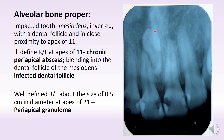Now moving on to 2-1, what we see is a reasonably well-defined radiolucency at the apex of 2-1, which is about 0.5 cm in diameter. I haven't outlined it because I want you to visualize it yourself.